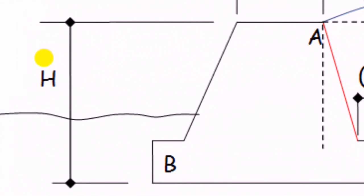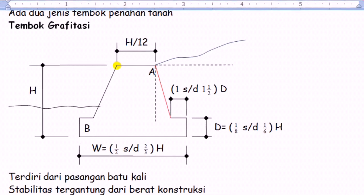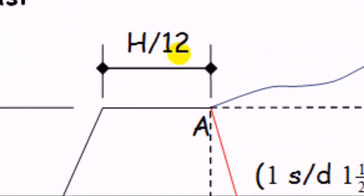Nah dari berdasarkan tinggi tembok inilah kita menentukan bagian atas dari tembok ini. Bagian atasnya biasanya kita bisa ambil H dibagi 12 atau H per 12.